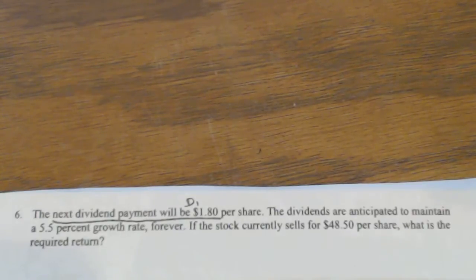So that is that constant growth rate formula, constant dividend growth rate formula, which is Pt equals Dt plus 1 over R minus G. If the stock is currently selling for $48.50, so that would be P0, what is the required return? So you're solving for R.